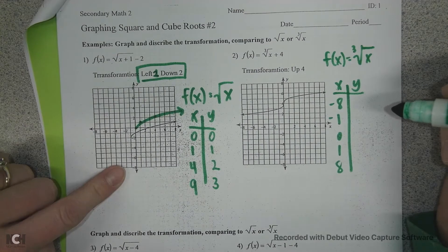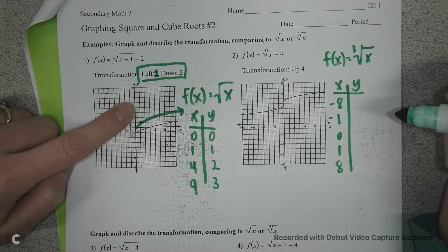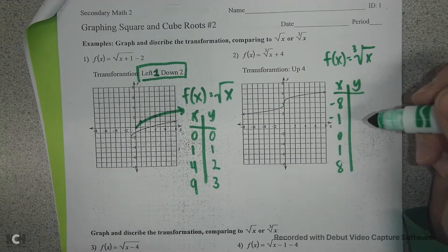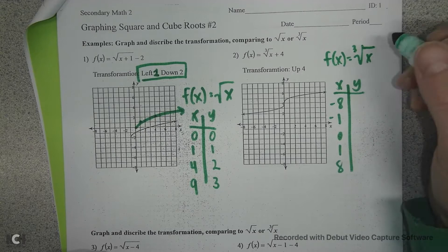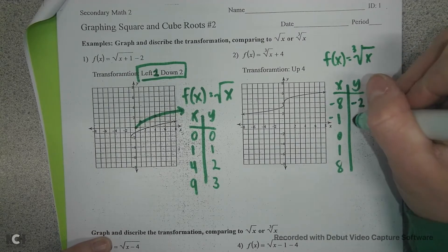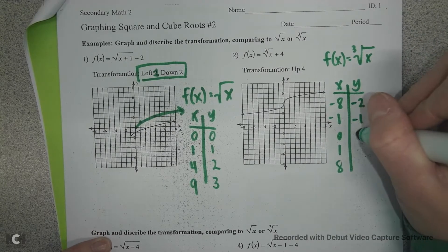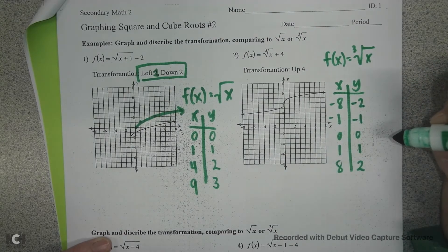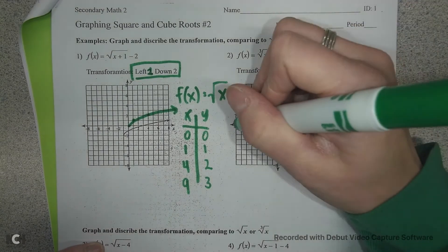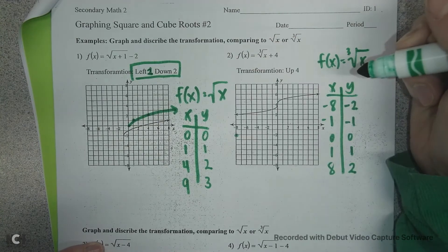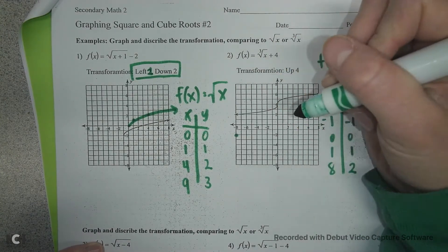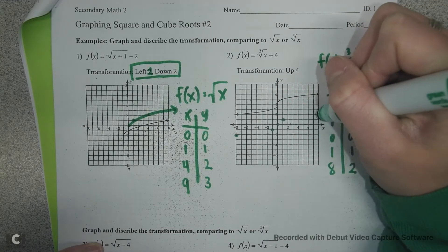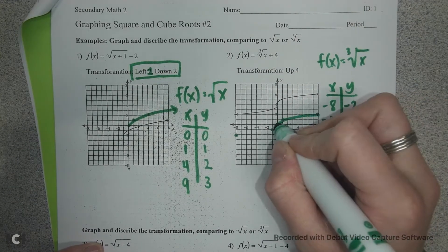For the square root parent function, there are no negatives. So we just want to get a feel for where the curve is going. The cube root of negative 8 is negative 2, the cube root of negative 1 is negative 1, the cube root of 0 is 0, the cube root of 1 is 1, and the cube root of 8 is 2. So we graph the parent function with points at (-8, -2), (-1, -1), (0, 0), (1, 1), and (8, 2).